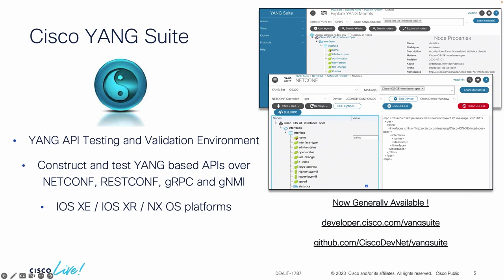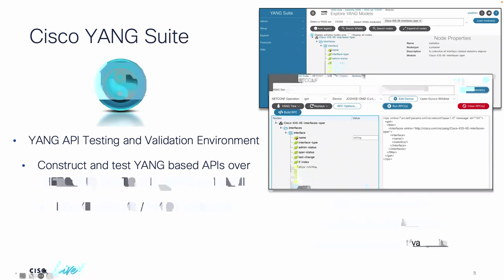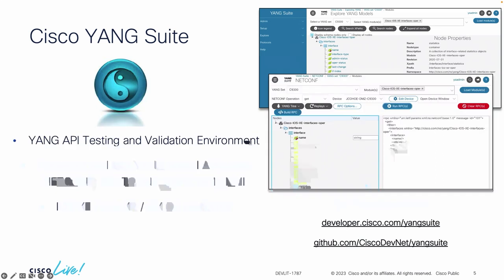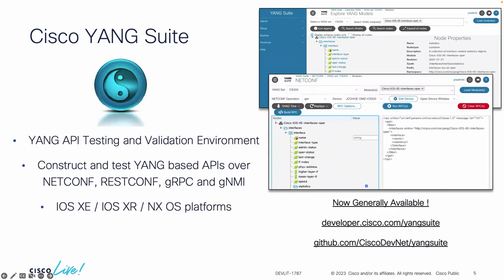Yang Suite can be used as a validation and testing environment, and it can help us construct Yang-based payloads to send to our devices. This can be for configuring, or we can actually use Yang Suite as a telemetry collector or receiver. It can be used against any of the Yang APIs, including NetConf, RESTConf, GNMI, or GRPC. It's generally available and free to use — you can download and install Yang Suite today and start using it in your network.